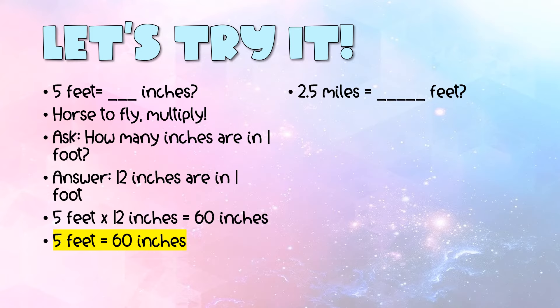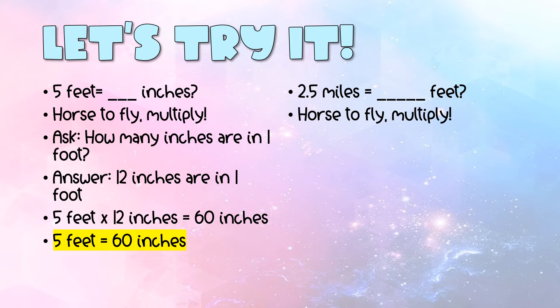Notice you're going to a smaller unit but the number gets bigger. Let's try a decimal example — since you're in fifth grade, you may have decimals. If we have 2.5 miles and we're trying to figure out how many feet we have, we use horse to fly, multiply, because we go from big to small. Miles are bigger — those are the horse — and feet are smaller, the fly.